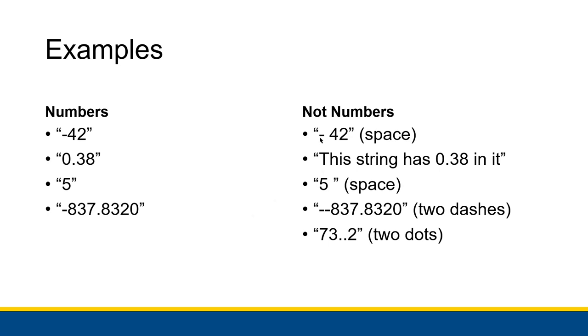Things that are not numbers are minus sign space 42, or this string has 0.38 in it. This is not a number. It contains a number, but by itself it is not a number. The entire string has to only contain a number. This minus space 42 thing contains that space, and that space disqualifies it from being a number.